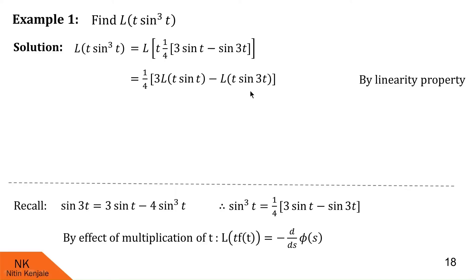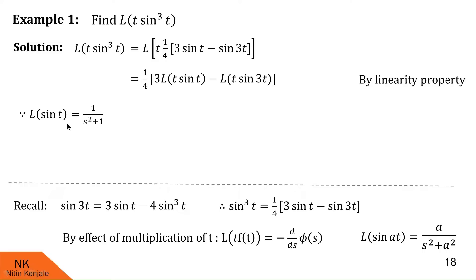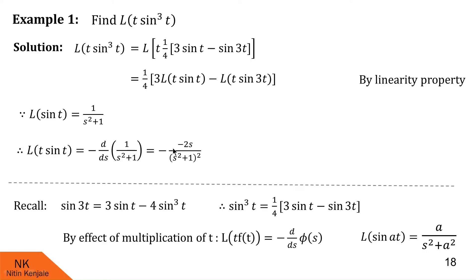To do so, we first find out Laplace of sine t and sine 3t using the formula Laplace of sine at, which is a upon s square plus a square. In the first case a is 1, so Laplace of sine t is 1 upon s square plus 1. Therefore Laplace of t into sine t, using the effect of multiplication by t, is minus derivative of 1 upon s square plus 1, which gives minus 1 upon (s square plus 1) squared into 2s. Together, this becomes 2s upon (s square plus 1) squared.